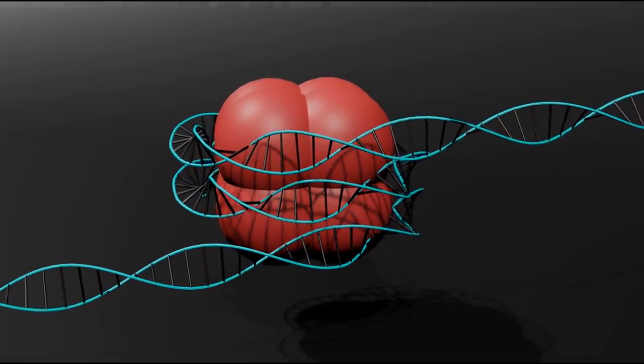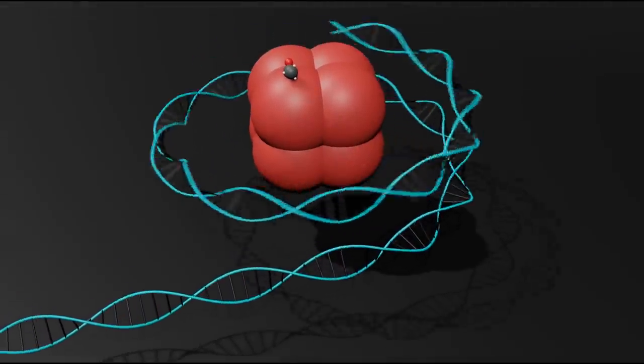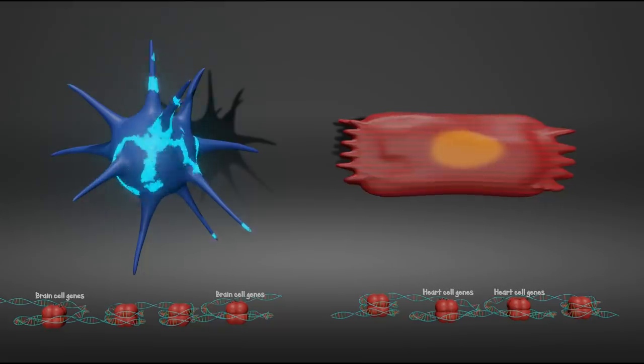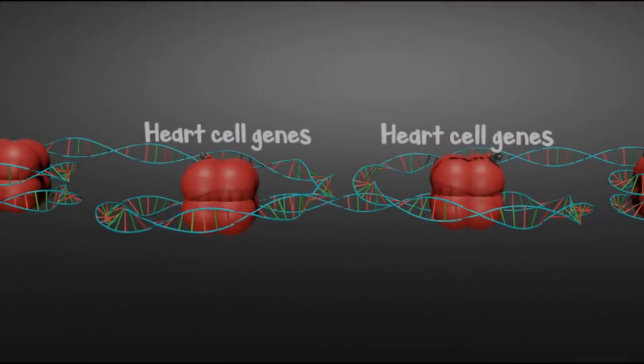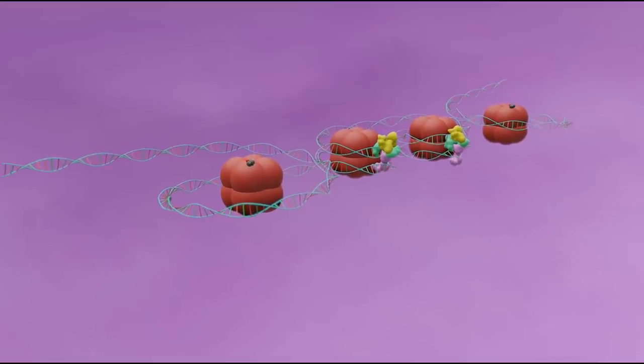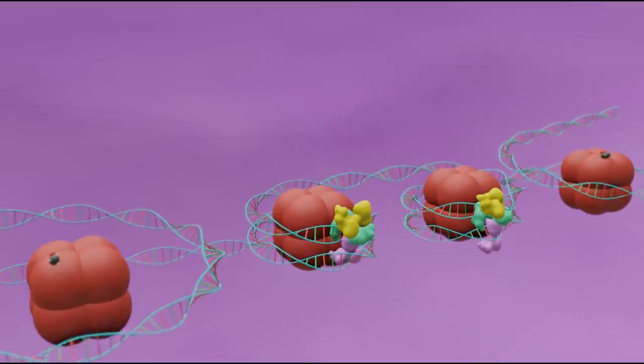However, if we attach an acetyl group to the histones, this reduces the interaction between them and the DNA, allowing it to unwind and relax a bit. Cells place acetyl groups on histones near relevant genes for their function, so heart cells have acetylated histones near heart cell genes and brain cells have acetylated histones near brain cell genes. Sirtuins are deacetylates, which means wherever they are, the DNA is wrapped up tight and whatever genes are near them are inaccessible.